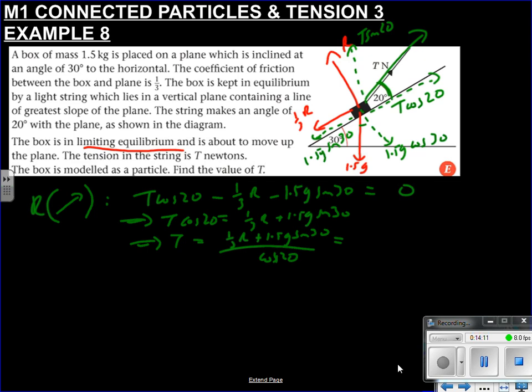But I need to know what R is, so I've got to resolve perpendicular to the slope. It's always the same. In all these examples, it's always the same. So we've got R going up plus T sin 20 going up. What's opposing it? 1.5g cos 30. Anything else? Don't think so. Equals zero. Just a quick count of how many forces have been included. So 1, 2, 3, 4, 5, 6. And 1, 2, 3, 4, 5, 6. Yep. All forces have been included, so I know I'm all good.